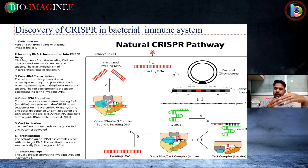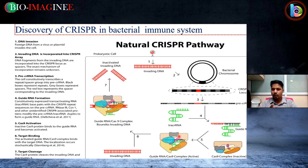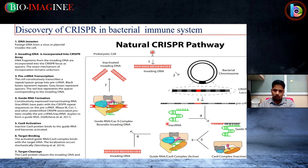After that, there will be certain repair mechanisms. Two types of mechanisms exist: homology-directed repair and non-homologous end joining. How these occur will be explained in the next slide. This describes the natural CRISPR pathway.